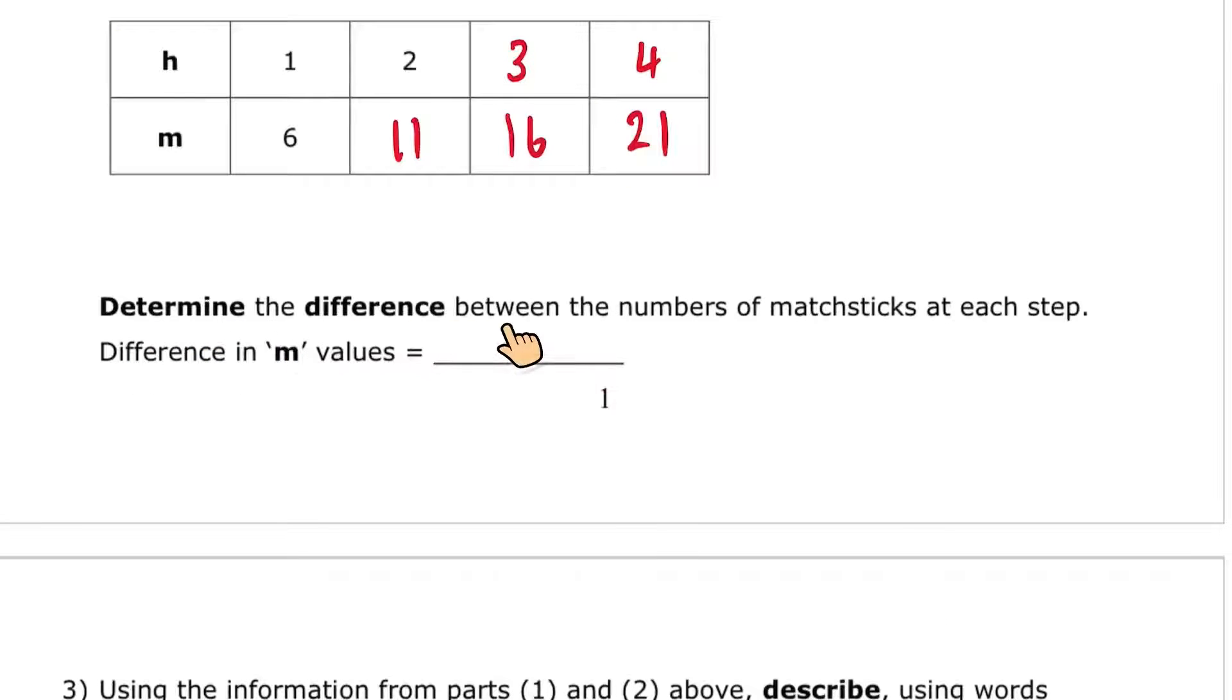Determine the difference between the number of matchsticks at each step. Difference in M values equals. Now the word determine means to find the only possible value. We can see that from 6 to 11, it's plus 5. Again, from 11 to 16, plus 5. And from 16 to 21, again, it's plus 5. So my answer is that I'm always adding 5. It's plus 5.